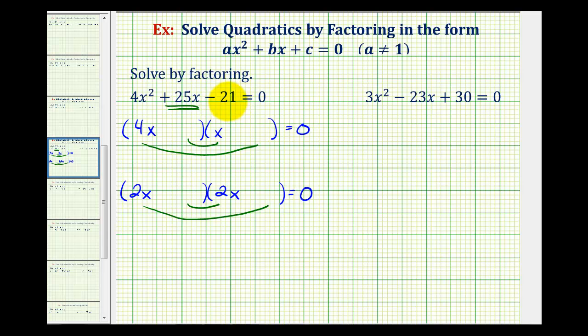Luckily there aren't too many factors of negative 21. We could use negative 21 times one, negative one times 21, negative three times seven, or negative seven times three.